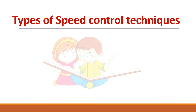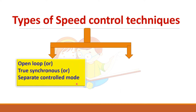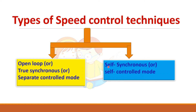There are two types of speed control techniques for synchronous motor. One is the open loop method. Another one is called the self-controlled mode or self-synchronous mode. The open loop method was covered in the previous video. In this video, we will see about the self-synchronous mode or self-controlled mode.